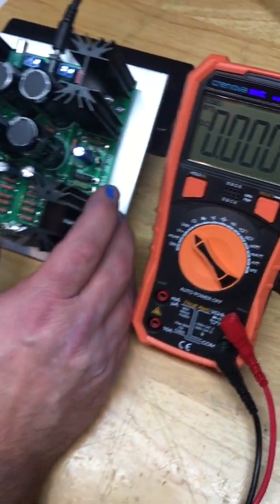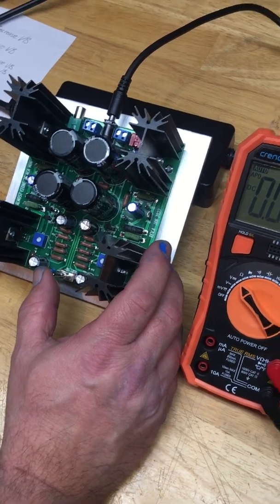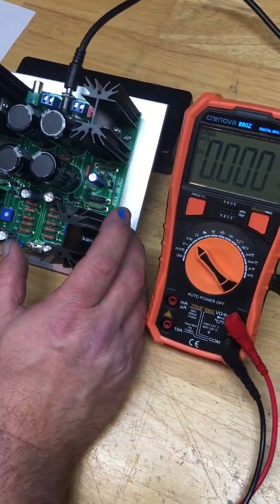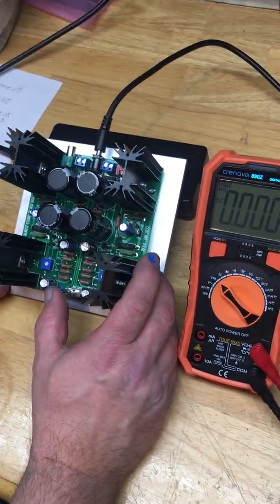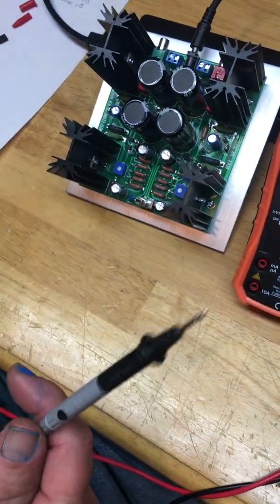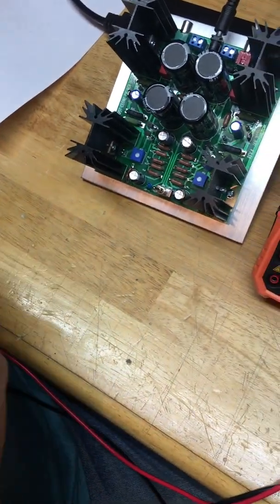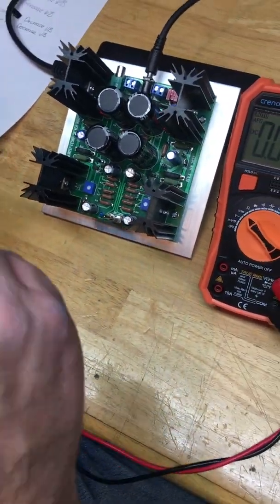Alright, we're back with another video on biasing the ACA Mini. The question we have is whether you can bias it with one meter and one set of probes and do it with any ease and accuracy.